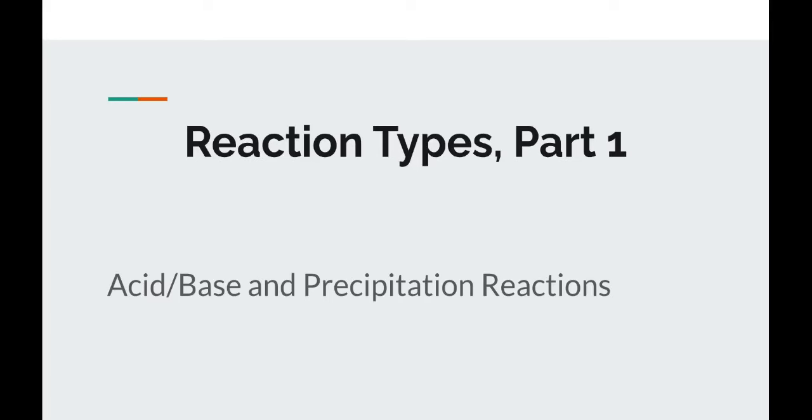This is the first in a two video series about types of reactions. Chemical reactions can be sorted into some categories, which makes it easier for us to see the patterns and predict what kinds of products are going to be formed when certain reactants react with each other.